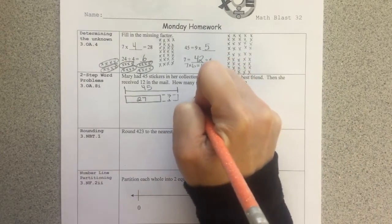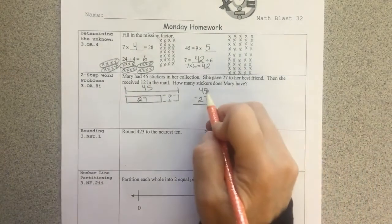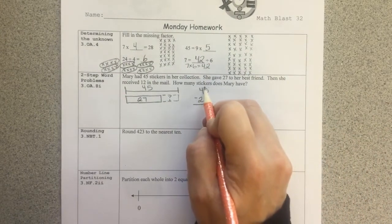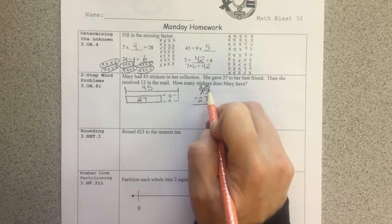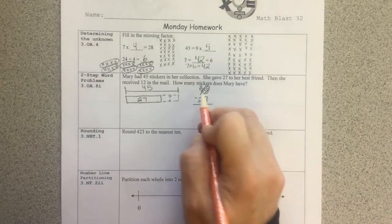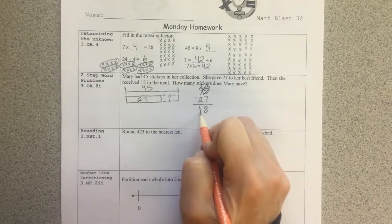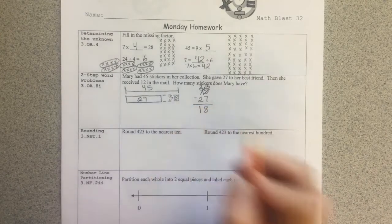That's the first step that we're trying to figure out. So I'm going to take 45 and subtract 27 that she gave away. 5 ones minus 7 ones. I need to come over and borrow a 10. Let 10 ones fall out with the 5 that are here. That's 15 ones minus 7 ones is 8 ones. 3 tens minus 2 tens is 1 ten. So this is 18 that she had left.